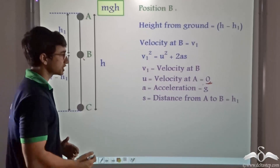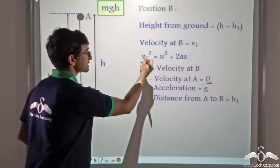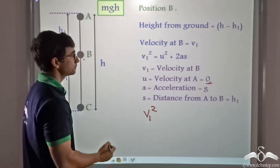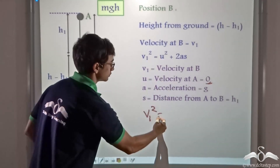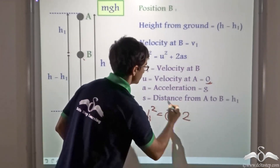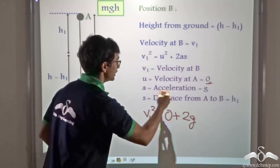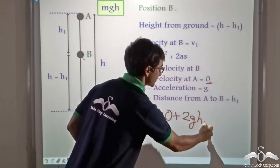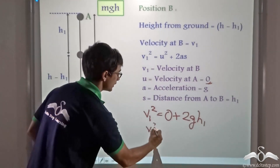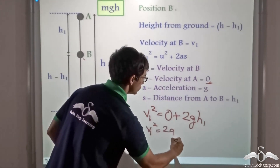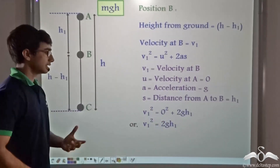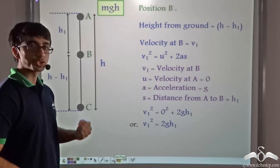So using this information we can write, by replacing the values: V as V1, U as zero, and 2A as G, and S as H1. So what does this give us? This gives us V1² = 2 × G × H1. Thus we can say V1² = 2GH1.